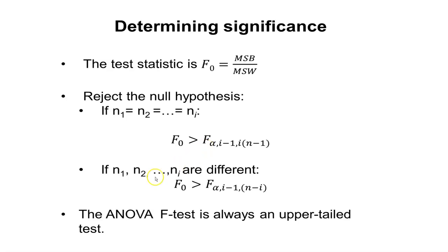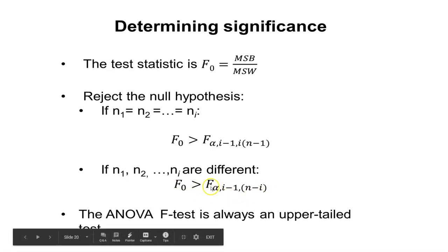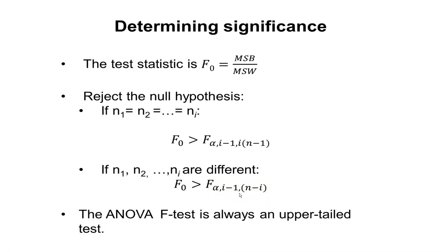If the different values of N are different — that is, you have different numbers of samples within each treatment — the critical value will be calculated slightly differently. It's not essential that you know how to look these values up in the F table when working in R, but it is important to recognize that differences in sample sizes affect how the F test is calculated. The F test always tests the upper tail value, and the F distribution goes from zero to infinity, so we don't have negative values like we might with the t-test or z-test.